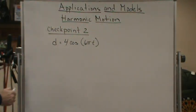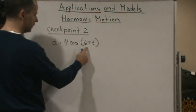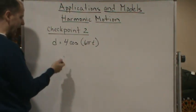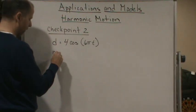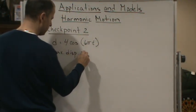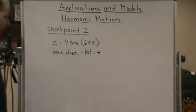So d equals 4 cosine of 6 pi times T. So we know the maximum displacement is going to be 4. So maximum displacement equals the absolute value of A, which is equal to 4.